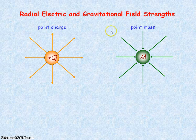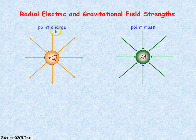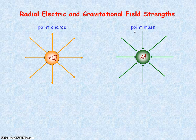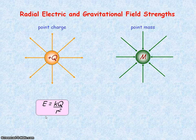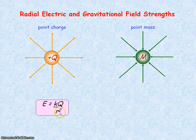Both a point charge and a point mass have radial fields. The electric field strength for a point charge is given by an equation where the electric field strength is directly proportional to the charge of the object, but it obeys an inverse square law with the distance r away from the object.